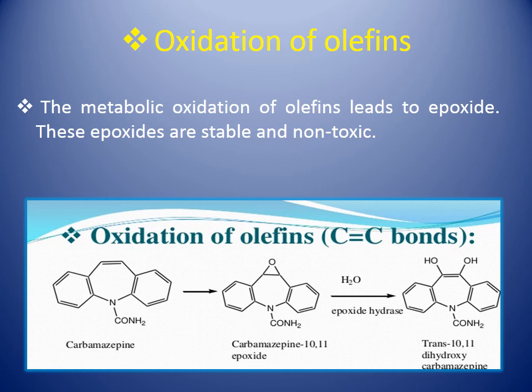Another example is phenytoin. In phenytoin also, there is introduction of an OH group on the benzene ring to form parahydroxyphenytoin. This parahydroxyphenytoin and the arenols, having an OH group, become more water-soluble and can be easily excreted from the body.